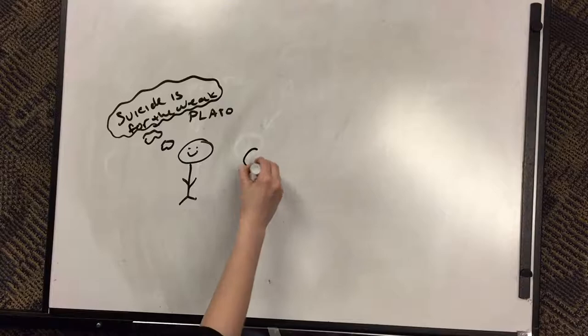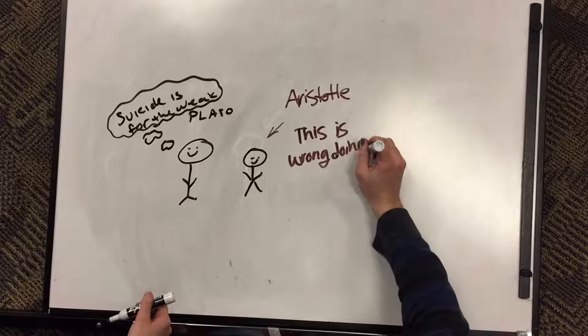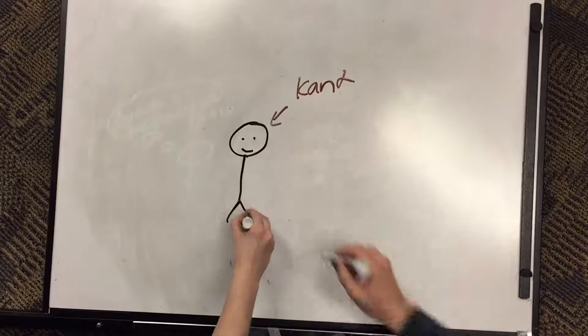Following Socrates came Plato, a student of his, who voiced very strong opinions on the matter of suicide. He states that people who partake in suicide are merely weak beings and have no regard for human life, while Aristotle, on the other hand, thought that suicide was an immoral act that did more wrong towards the society, but not towards oneself.